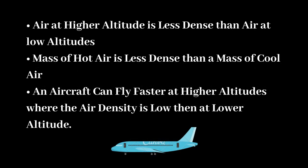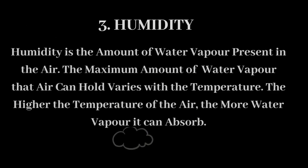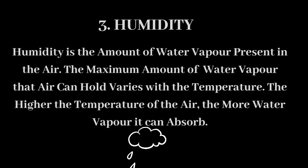Air at higher altitude is less dense than air at low altitudes, and a mass of hot air is less dense than a mass of cool air. An aircraft can fly faster at higher altitudes where the air density is low than at lower altitudes where density is greater. This is because air offers less resistance to the aircraft when it contains a smaller number of particles per unit of volume.